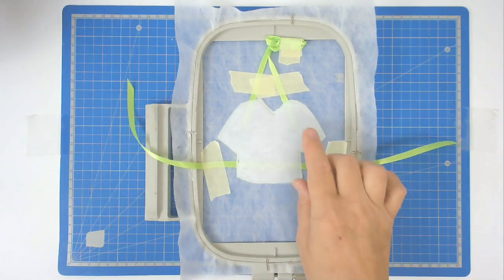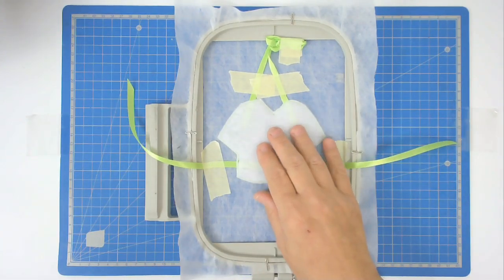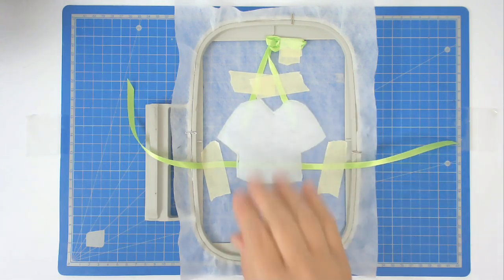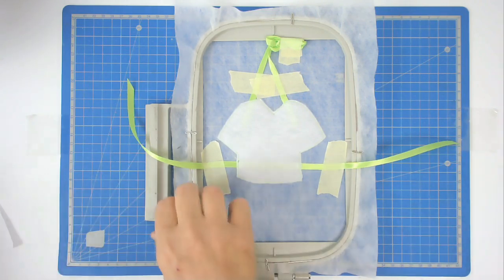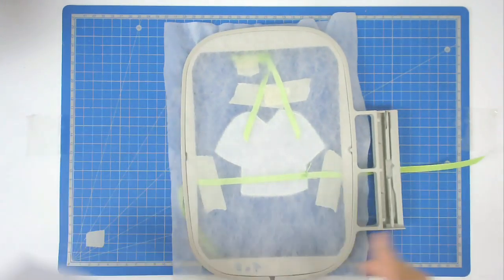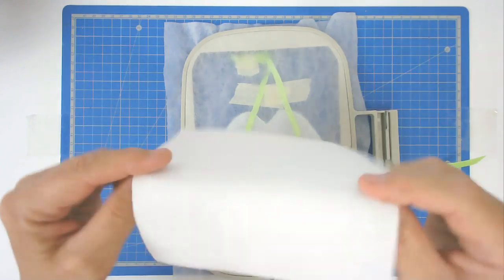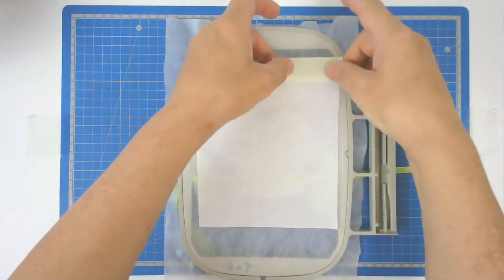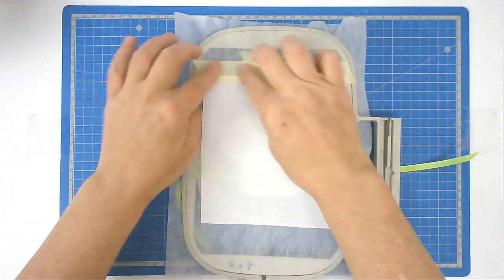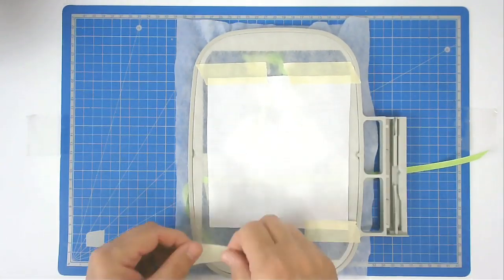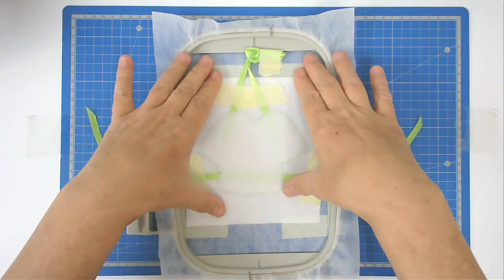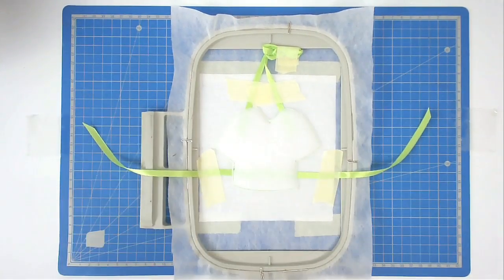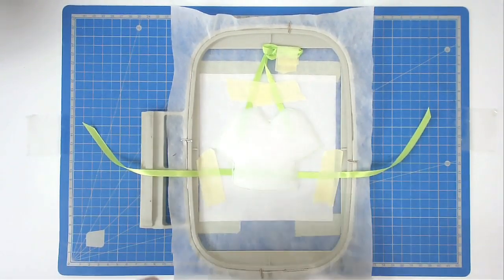Turn your hoop over, place your backing fabric over the t-shirt outline and tape it in place. Turn it back and place your front fabric over the t-shirt.